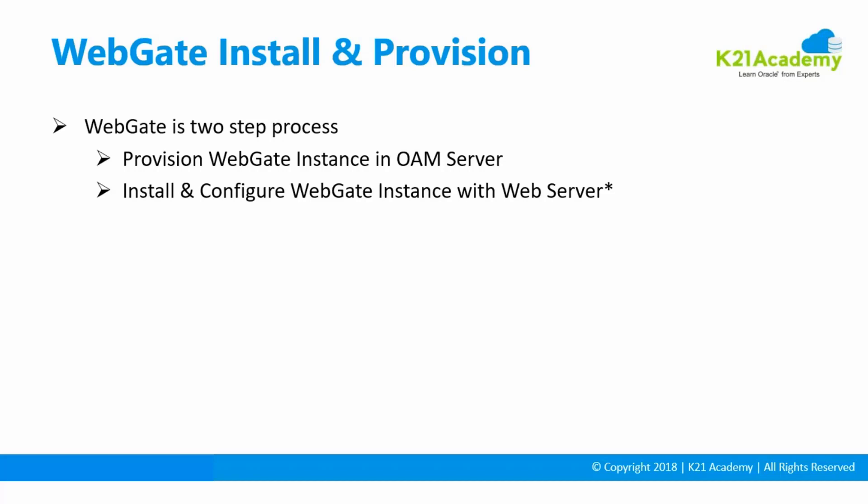Once it's done on the Oracle Access Manager side, you go to the web server side and install the software called WebGate. In the 11G version of Oracle HTTP Server, you have to install the WebGate and then configure it. In 12G, there's another web tier component called Oracle Traffic Director. Both Oracle Traffic Director and Oracle HTTP Server have WebGate pre-installed, so all you're doing is configuring it.